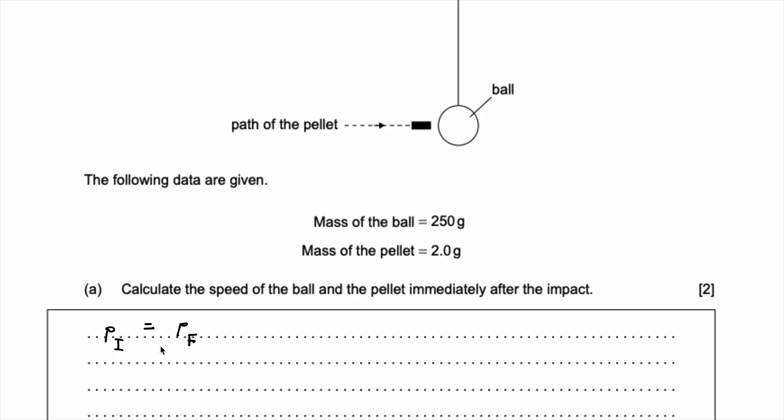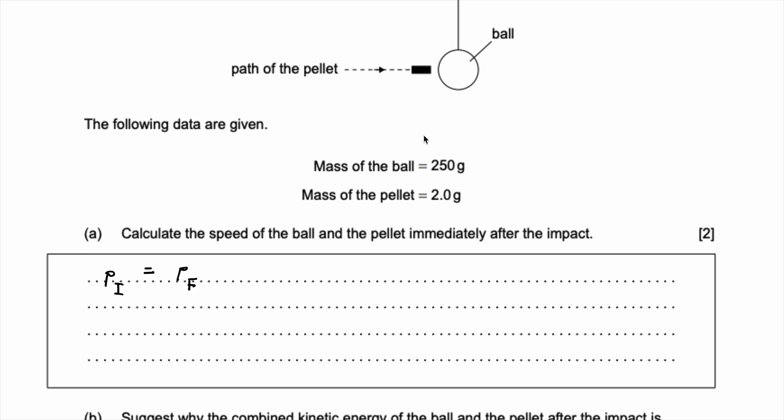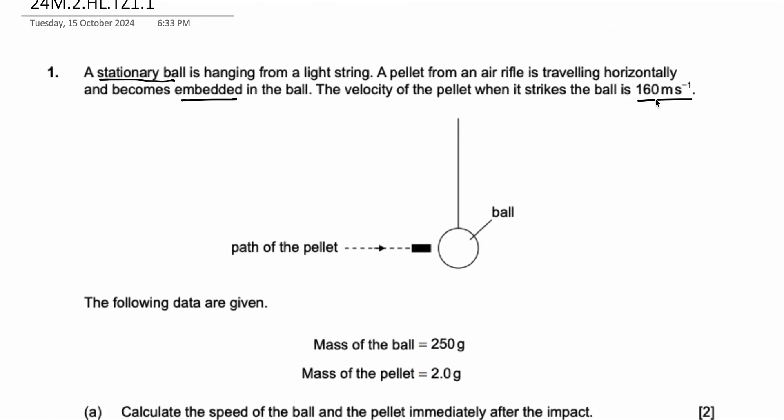So what does this mean? Well, let's for the initial sum the masses and their velocities. So in the system we have two entities: the pellet and the ball. What's the mass of the pellet? The mass of the pellet is 2 grams and we know the velocity of the pellet was 160 meters per second.